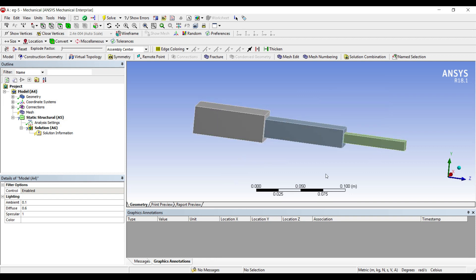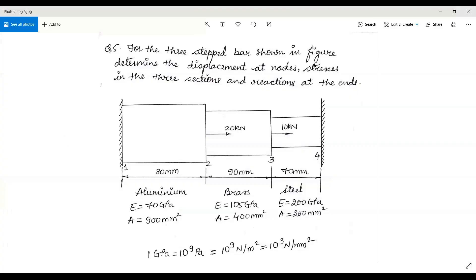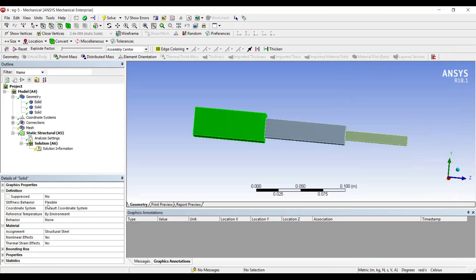I will assign material now. For the first solid, the material is aluminum, 70 gigapascal. I need to allocate material, so I will go to new material.